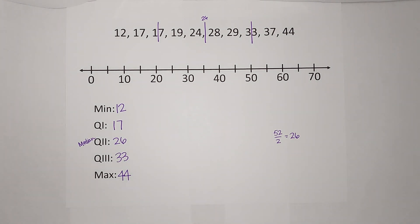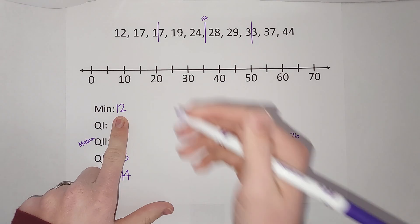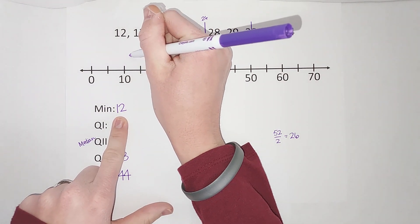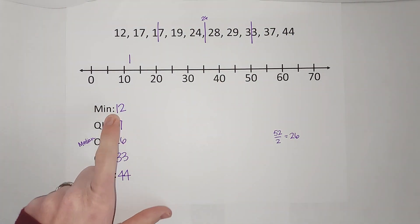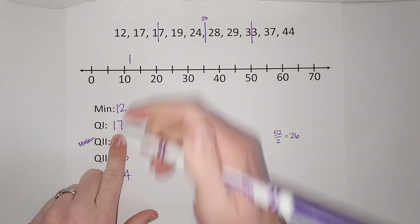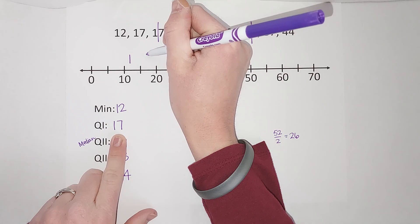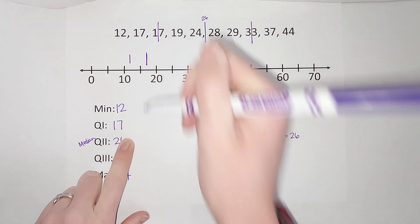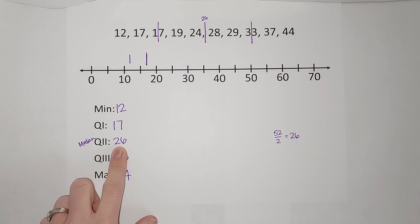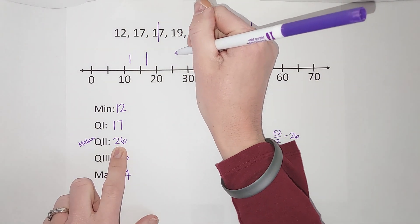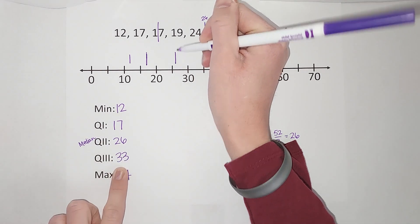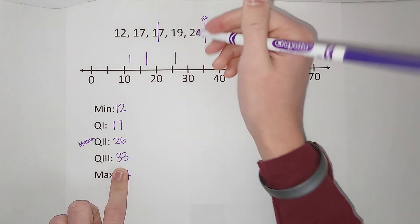Now we are going to use a box and whisker chart to show this information. My minimum is 12, so a little above 10 I'm going to put a mark. My first quartile is 17, so a little above 15, there we go. My median, my second quartile is 26, so a little above 25, about here. My third quartile is 33, so approximately there.